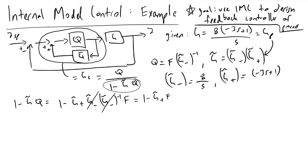And if we rigorously determine what our numerator is of this function, we will find Q is equal to F times G tilde minus inverse,